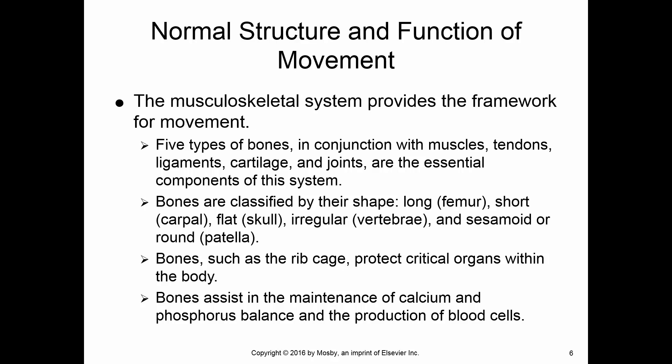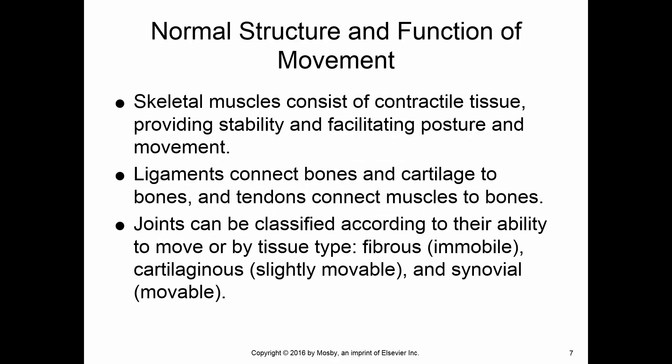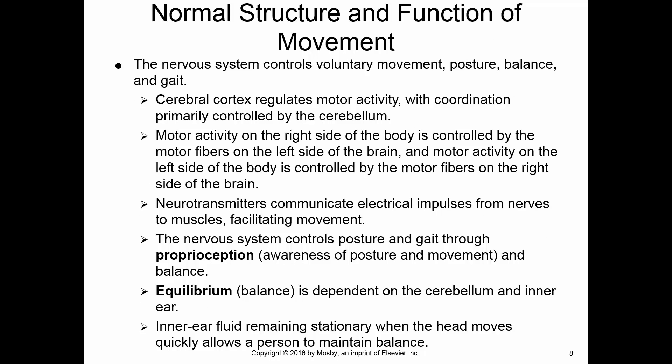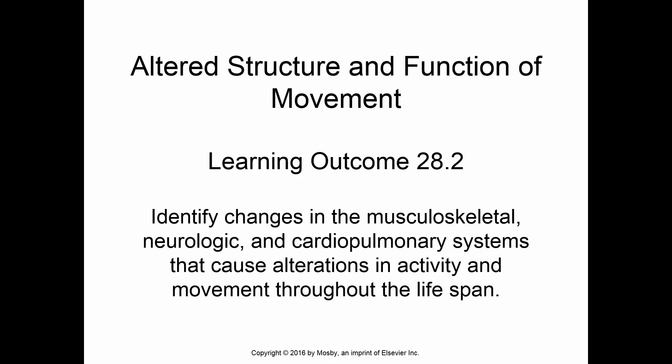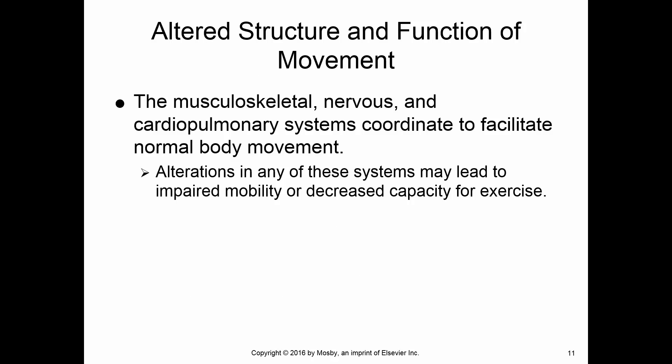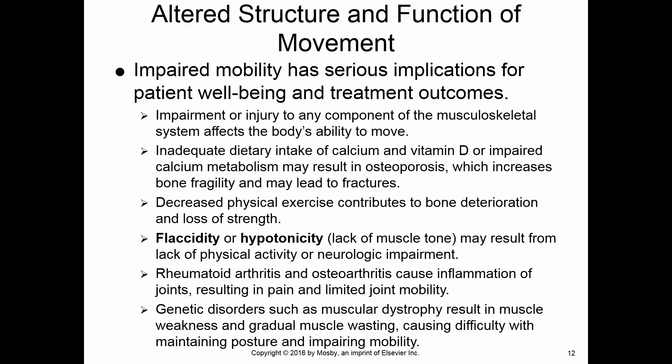Those contributions break down into musculoskeletal, nervous system, and cardiopulmonary. With altered structure, you're going to have some problem with one of those systems. Impaired mobility can come from the musculoskeletal system — problems with muscles, skeleton, broken bones, arthritis. Diet has a lot to do with bone health, and exercise affects both bone and muscle health.